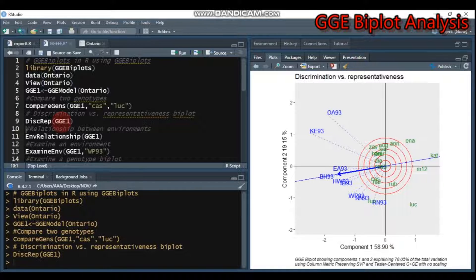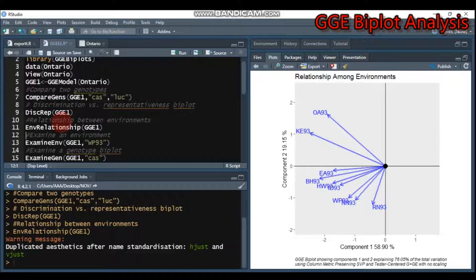If you want to see the relationship between environments, you have to use env.relationship and write GGE1. You will get such a biplot that shows the relationship among environments.